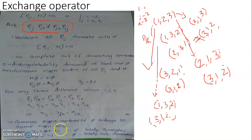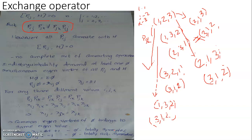The common eigenvectors phi belong to the same eigenvalue. So phi must be a common eigenvector of all these two-particle exchange operators and the Hamiltonian. Lambda_ij can have two choices of values: either plus 1 or minus 1. If it is plus 1, then the wave function must be symmetric — the particle will always be represented by this symmetric wave function, hence it is referred to as a totally symmetric wave function.